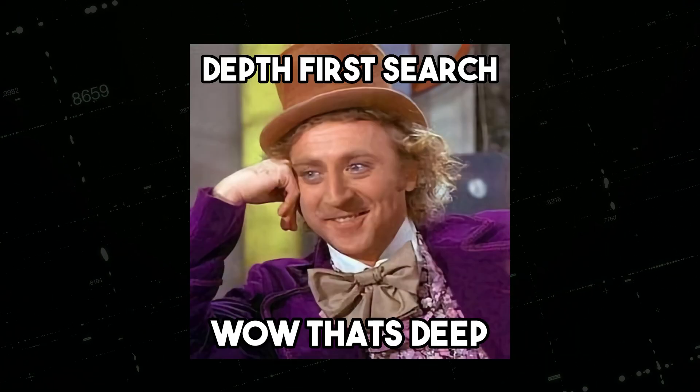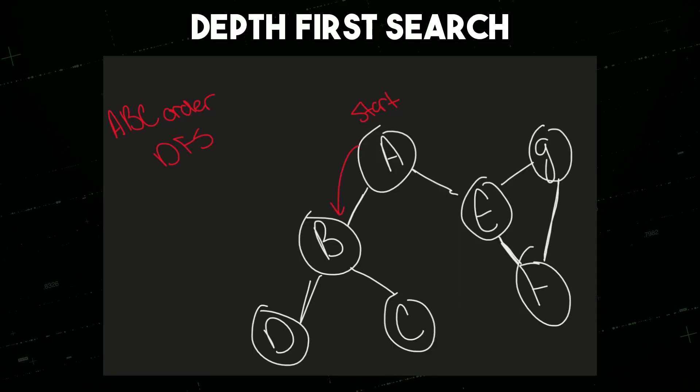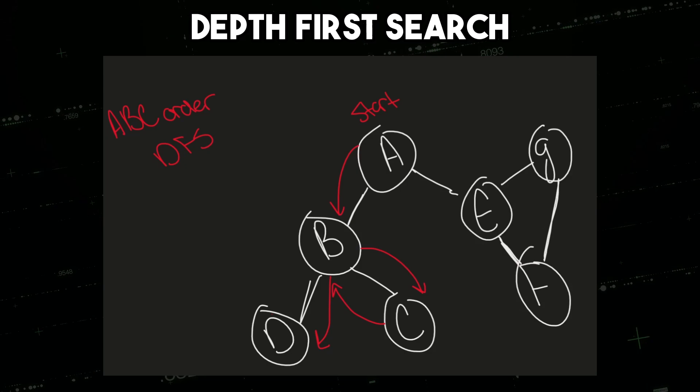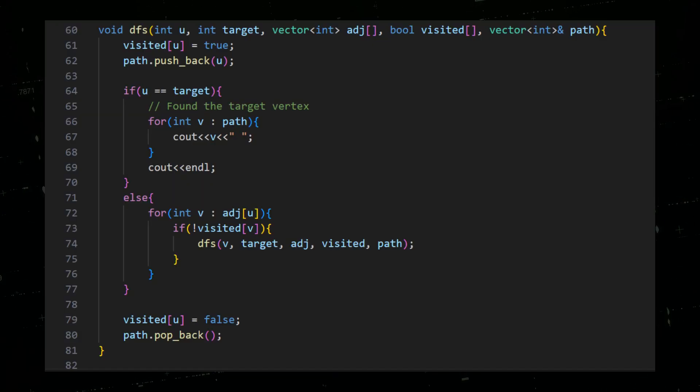To solve this problem using DFS algorithm, we can start at the source vertex and explore as far as possible along each branch before backtracking. We can keep track of the visited vertices using a visited array. We can implement this approach using recursion as follows.